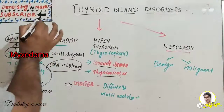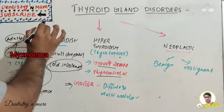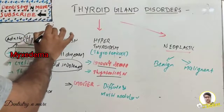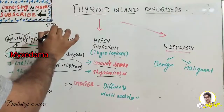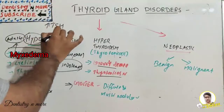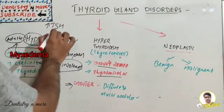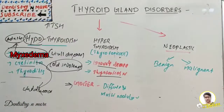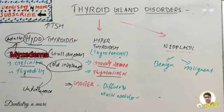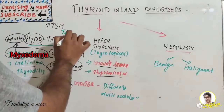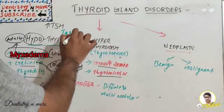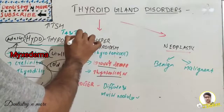In the lab findings for cretinism and hypothyroidism, TSH (thyroid stimulating hormone) will be increased whereas T3 and T4 will be decreased.